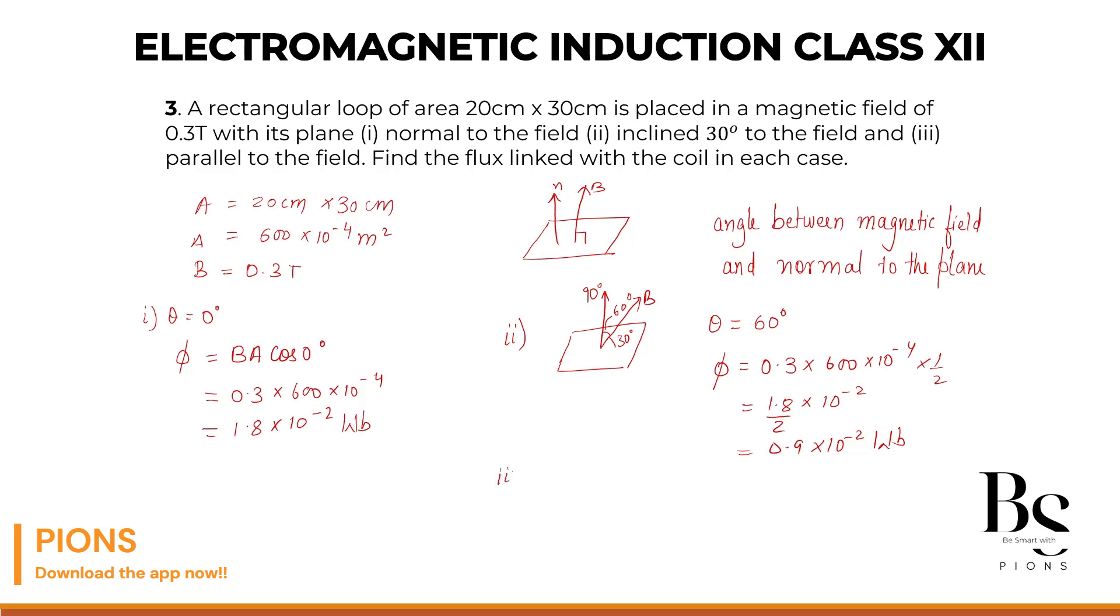Done with the second one. Let's go to the third one. Third one says parallel to the field. So let's try to draw this. If this is our plane. Okay. And this is parallel to the field. So parallel to the field means the magnetic field is along the plane. And normal will be here.